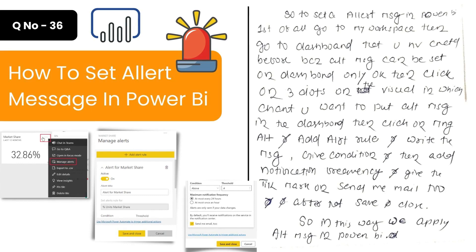The next question is: how do you set an alert message in Power BI? To set an alert, go to My Workspace, then go to the dashboard you created, because alert messages can only be set at the dashboard level. Click the three dots on the visual where you want the alert. Click Manage Alert, add an alert rule, write the message, set the condition, add the notification frequency, tick the 'Send me mail' option, then save and close.